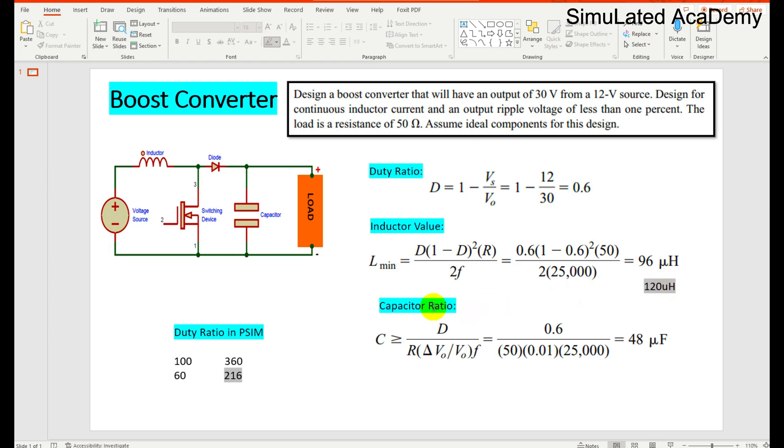The capacitor value is calculated using the formula D divided by (R times delta V0 divided by V0 times F), where delta V0 divided by V0 is the ripple in output, supposed to be less than 1% and kept at 1% here. So the capacitor value turns out to be 48 microfarads.